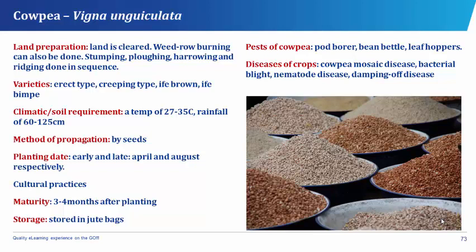The planting of cowpea is done early April and late August. The cultural practices of cowpea involve thinning, weeding, and fertilizer application. Cowpea matures between 3 to 4 months after planting and is stored in jute bags. In harvesting cowpea, brown mature or ripe pods are harvested by hand picking — early maturing varieties are harvested 3 months after planting, while late maturing varieties are harvested after 4 months. Harvested pods are dried under the sun, and shelling is done by beating the dry pods with sticks or by pounding lightly in a mortar on a small scale; shellers are used on a large scale.